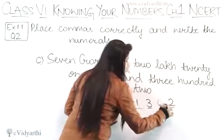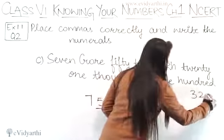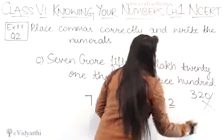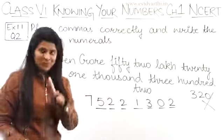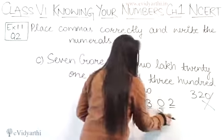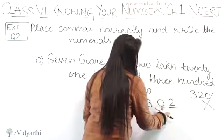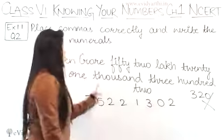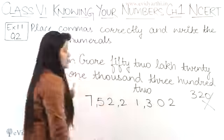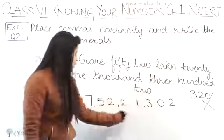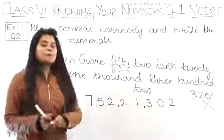302. 302 as it is. In this also some students make a mistake. They write this as 3, 2, 0. This is wrong because this is 320, not 302. Okay. So the correct number we have here is 7, 5, 2, 2, 1, 3, 0, 2. Again, here we had crore and lakh. So comma will be placed according to Indian system, 3 digits first, 2 digits, then 2 digits. Okay. So this was the C part.